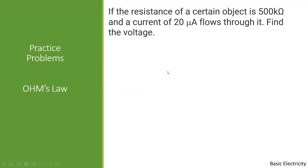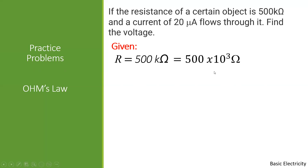Problem: if the resistance of a certain object is 500 Kilo Ohms and a current of 20 micro Amperes flows through it, find the voltage. Given: R = 500 Kilo Ohms. We have to consider the value of the prefix kilo — kilo means times 10 to the positive 3, so we write 500 × 10³ Ohms.